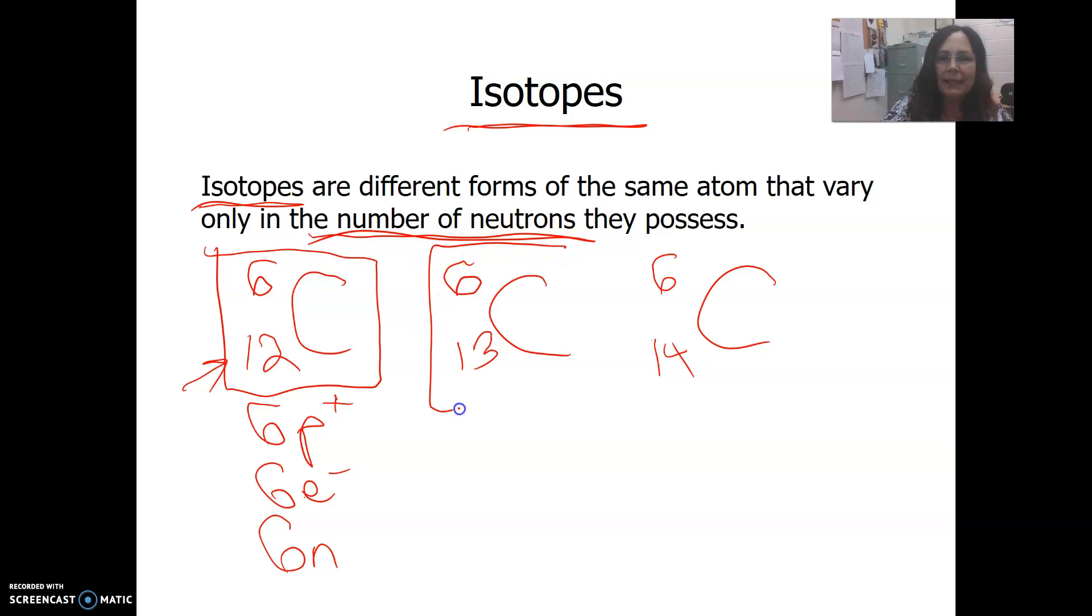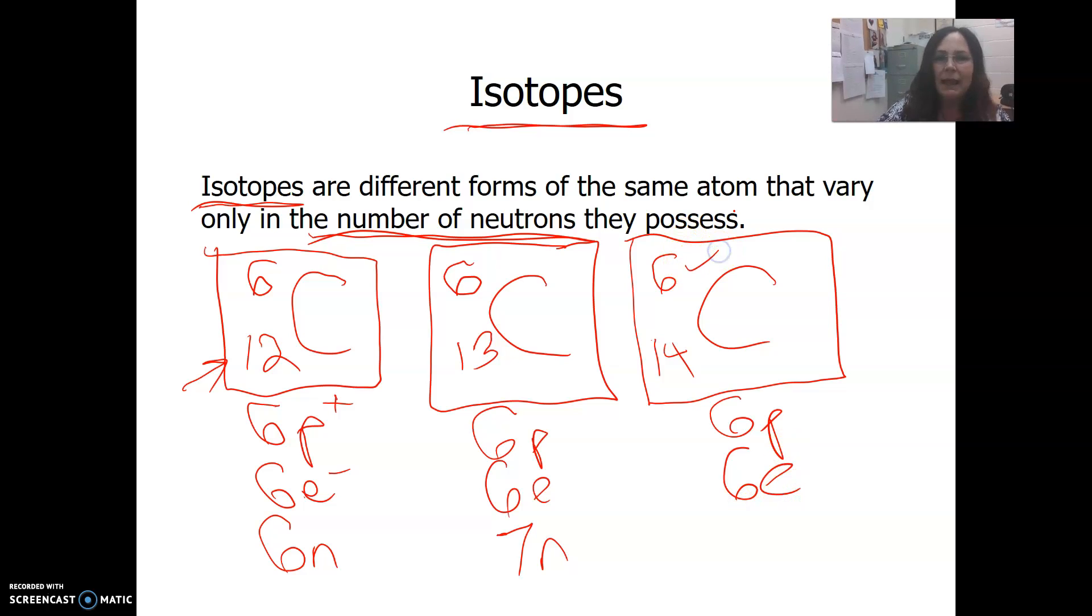In the isotope carbon-13, we still have 6 protons and 6 electrons, but this time, 13 take away 6 is 7. So this isotope has 7 neutrons. With carbon-14, we have 6 protons and 6 electrons from the atomic number 6. The mass number 14, subtract the atomic number 6, gives us 8 neutrons. Isotopes are forms of the same atom with different numbers of neutrons, and therefore, their mass numbers are different.